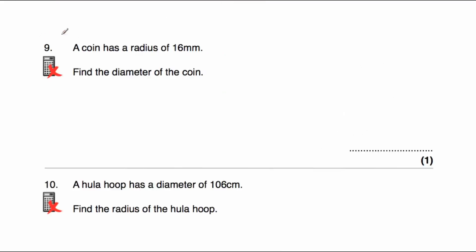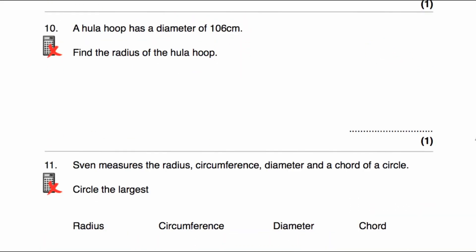Question nine: a coin has a radius of 16 millimeters — the distance from the center to the edge is 16mm. To find the diameter, we multiply by 2: 16 × 2 = 32, so the diameter is 32 millimeters. Question ten: a hula hoop has a diameter of 106 centimeters. To find the radius, we divide by 2: 106 ÷ 2 = 53 centimeters. So the radius of the hula hoop is 53 centimeters.